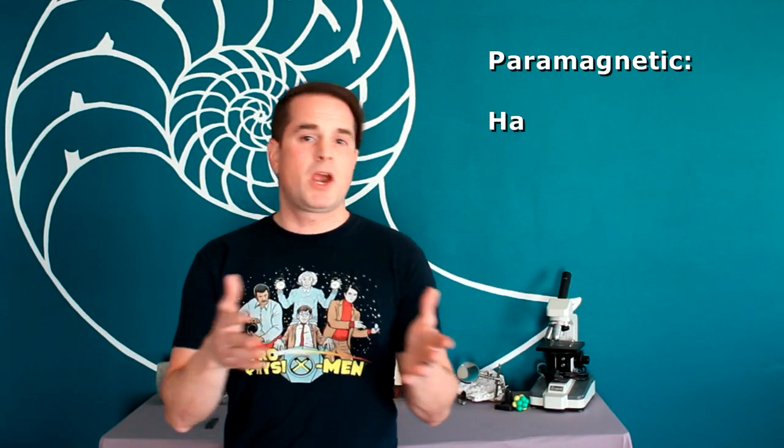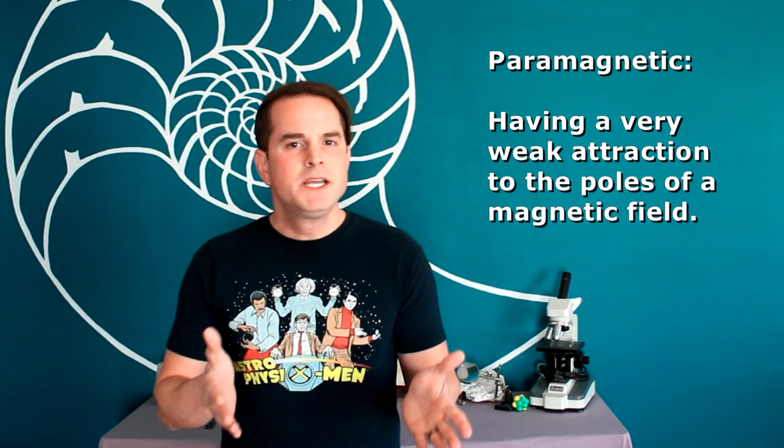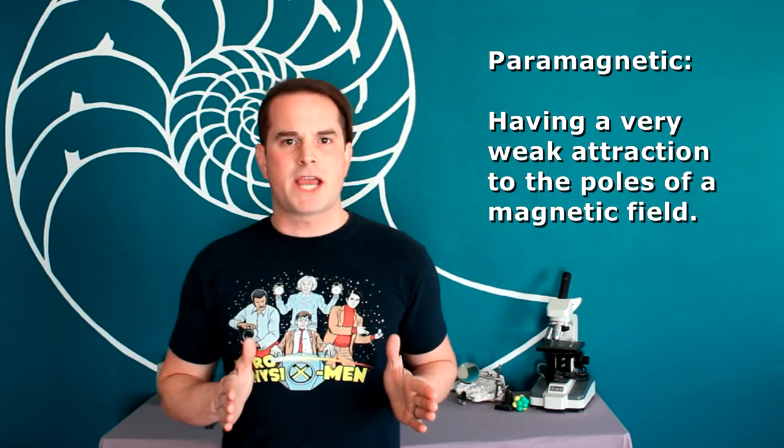Other materials, though, can be paramagnetic. To be paramagnetic means that you are also attracted to a source of a magnetic field, but it's a very, very weak attraction. Paramagnetism provides such a weak attraction that really you need a very strong magnet in order to observe it.